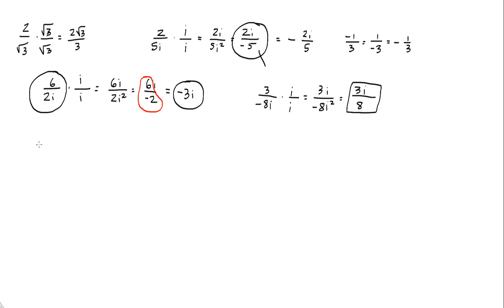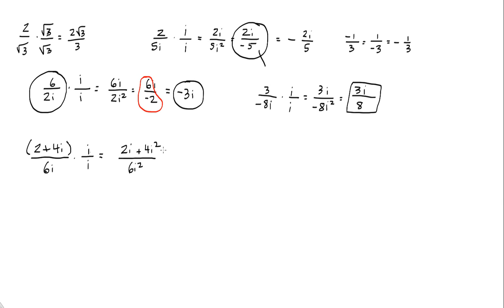Let's get a little more complicated. How about 2 plus 4i over 6i? I'm going to multiply by i over i — the denominator. On the top, I'm going to distribute: 2 times i is 2i, and then 4i times i is 4i squared. On the bottom, I have 6i times i, which is 6i squared. You've got a couple of i squareds to deal with. The rule is you take off the i squared and change the sign. So this is going to be 2i, and 4i squared becomes minus 4. Over 6i squared, which would be negative 6.